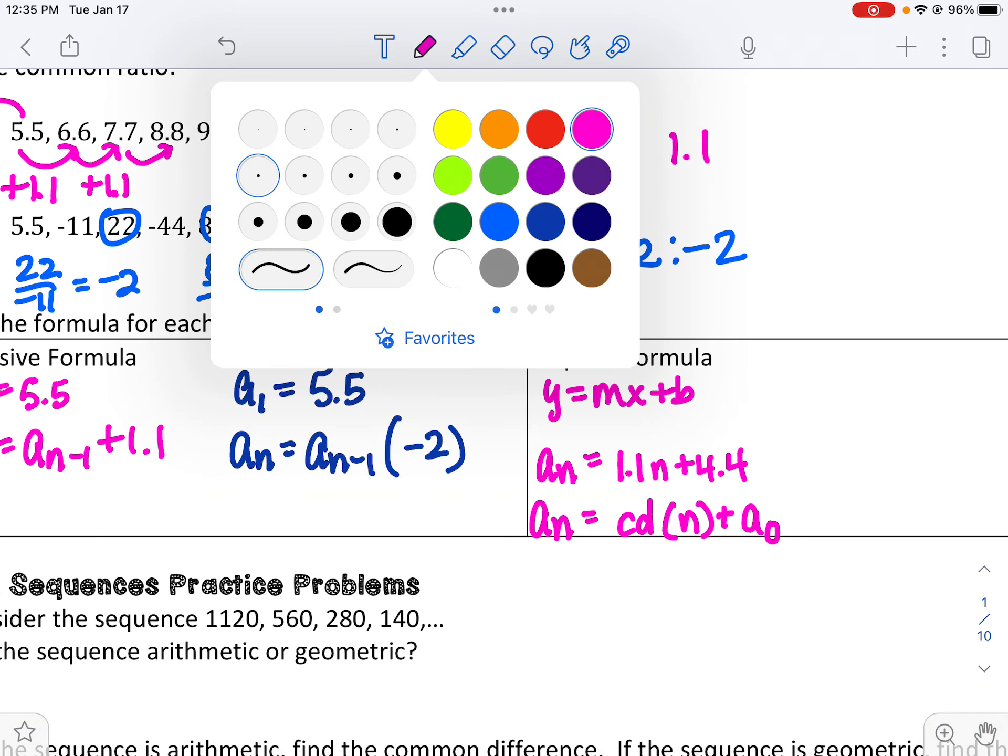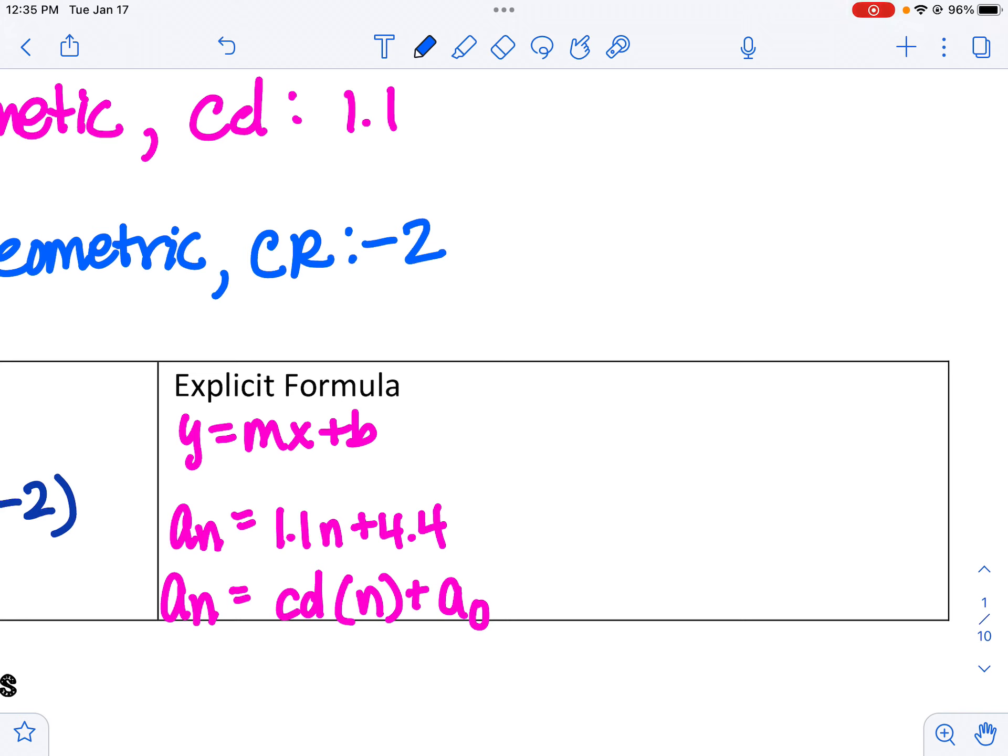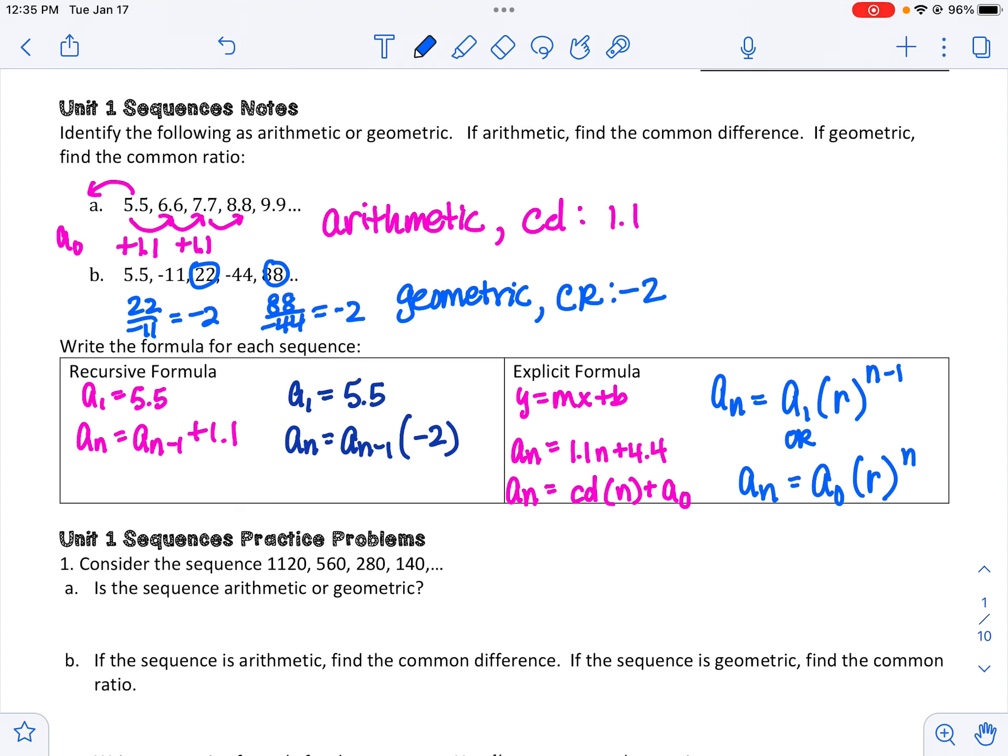And the explicit formula for if it's geometric is, and there's two ways to write this. To find any number, you can take the first term multiplied by the ratio to the n minus 1 power. Or if you want to start at the zero term, the zero term times the ratio to the n power. So there's two ways that we did that when we were looking at exponentials. So geometric is exponential.